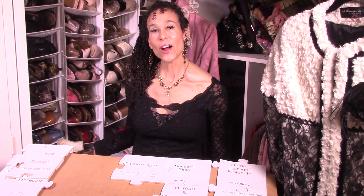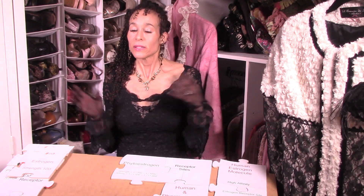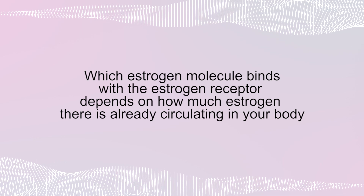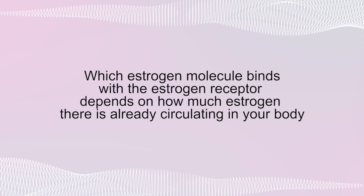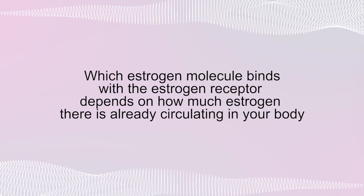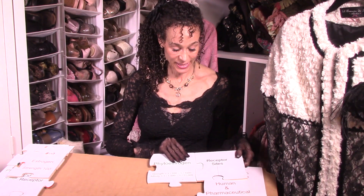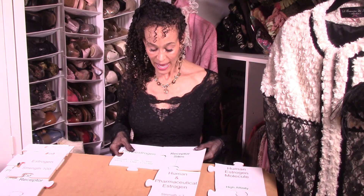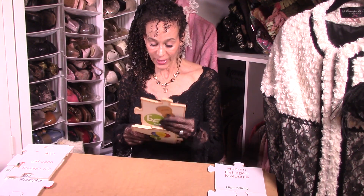So if we take our estrogens, the big question that we were embarking on in the last tutorial was: what determines which of those two kinds of estrogen gets to bind with the receptor site? And you learn that it all depends on how much estrogen there is already circulating in your body. So it's time now for some more examples with our puzzle pieces.